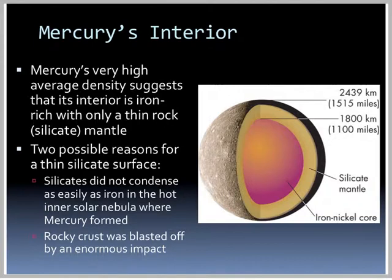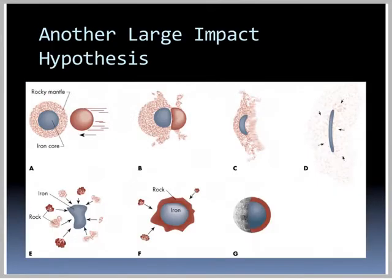Two possible reasons for a thin silicate surface: silicates do not condense as easily as iron in the hot inner solar nebula where Mercury formed, and the rocky crust may have been blasted off by an enormous impact. Looking at the cross section, it's mostly an iron-nickel core with a little bit of mantle. Under the large impact hypothesis, something large struck, destroying the planet's outer layers — iron liquefied and stuck together while other materials dispersed, so as it reformed it differentiated again, leaving mostly the iron core.